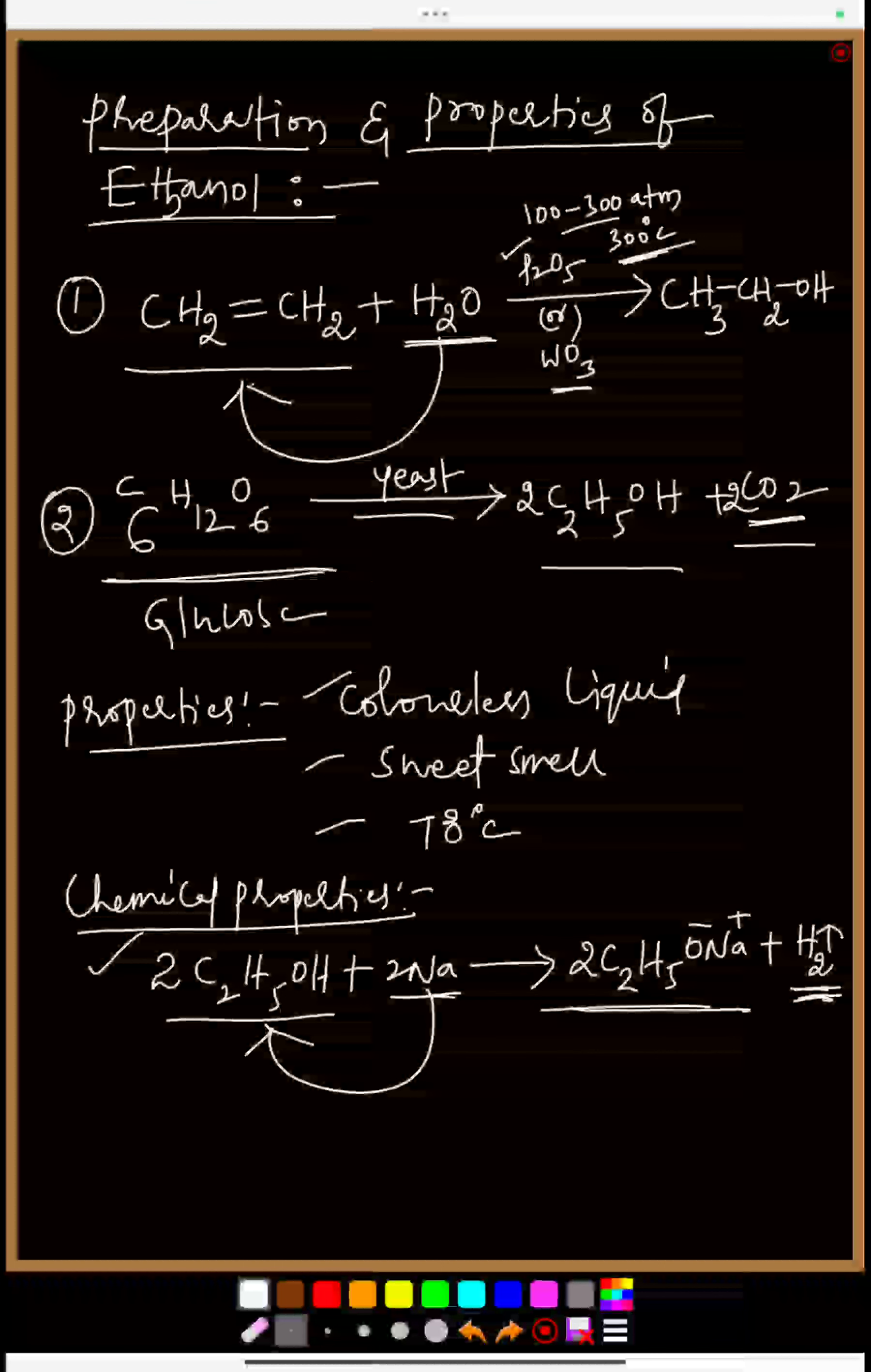And the second chemical property is ethyl alcohol involves in dehydration reaction in presence of sulfuric acid - concentrated sulfuric acid H₂SO₄. It means sulfuric acid acts as dehydrating agent and that removes water molecule from the ethyl alcohol.